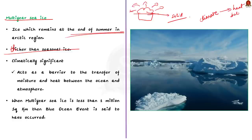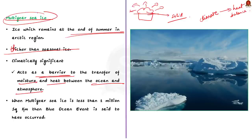Due to its thickness, the multi-year sea ice acts as a barrier to transfer of both moisture and heat between the ocean and atmosphere, thus preventing the positive feedback loop. This climatically significant multi-year sea ice is on the decline. When the area of multi-year sea ice falls below 1 million square kilometers, then a Blue Ocean event is said to have occurred.